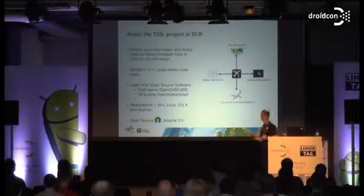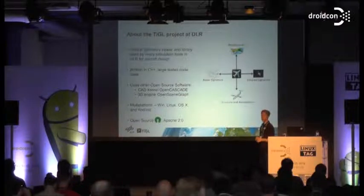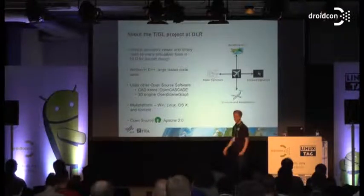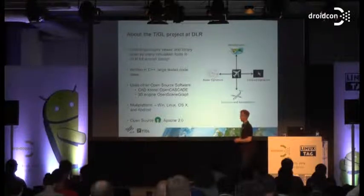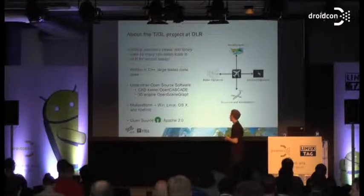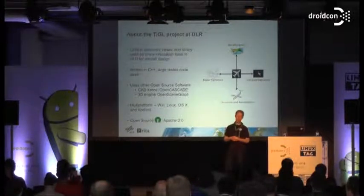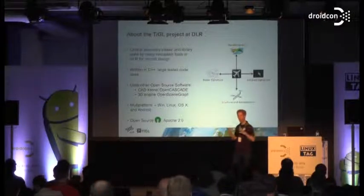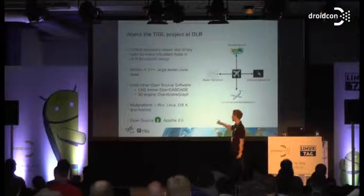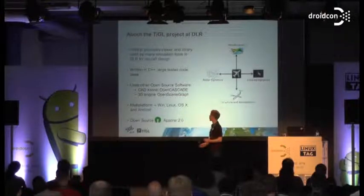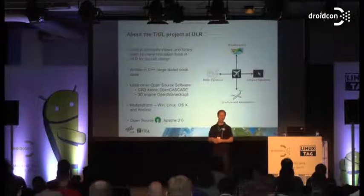The app we ported is called TiGL — the TiGL Geometry Library. It's a computational geometry viewer and library used by many simulation tools at the German Aerospace Center for designing aircraft and spacecraft. It's written in C++ and has quite a large code base with important tests. We use other third-party libraries, most importantly the OpenCASCADE CAD kernel, which we use to create geometries. This library consists of millions of lines of code, so you really don't want to rewrite it. For visualization, we use the OpenSceneGraph rendering engine, which is based on OpenGL.